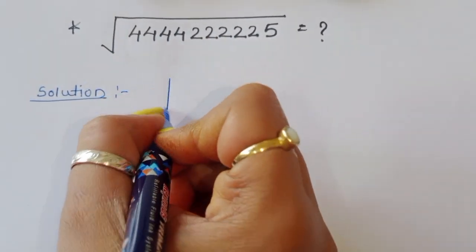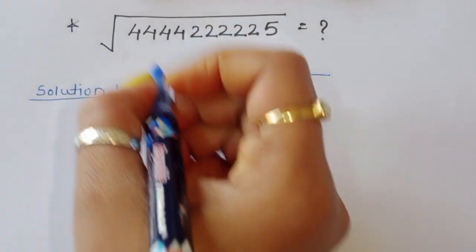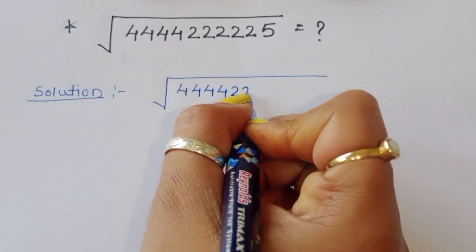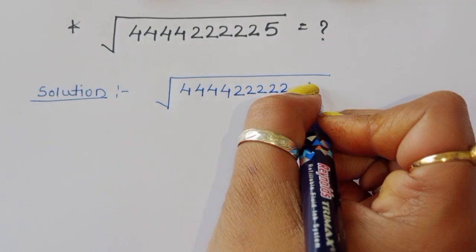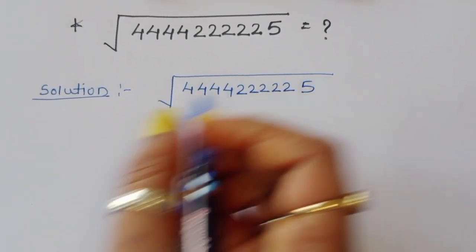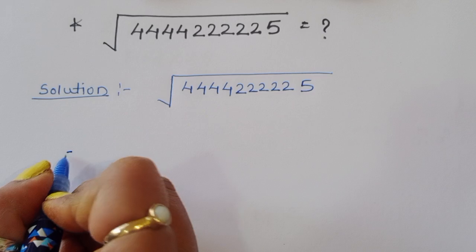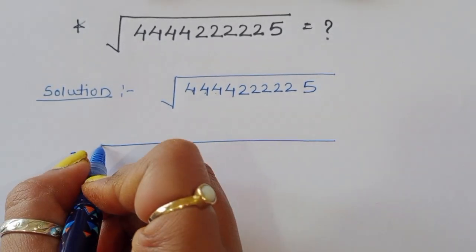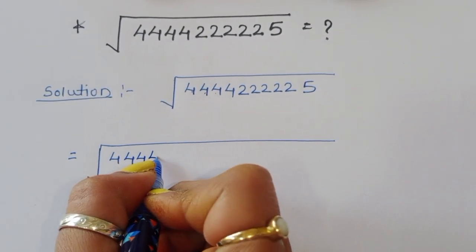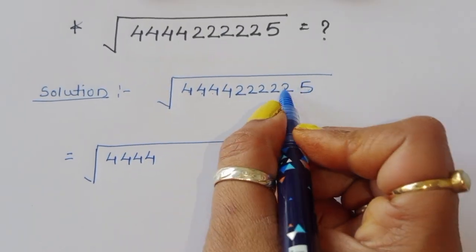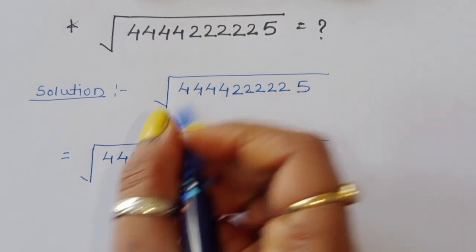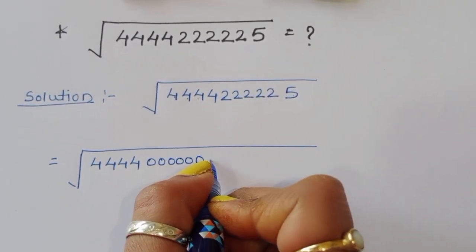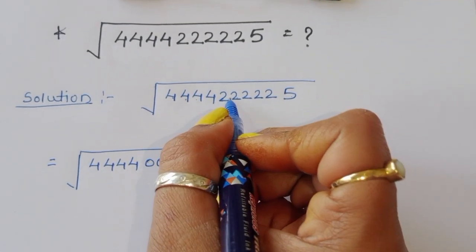We can write this as: square root of 4 repeated 4 times (which is 4444), multiplied by 2 repeated 5 times (which is 22222), multiplied by 5. We can express 4444 as 4 times 1111, giving us 6 digits to work with, and write it as 4 times 1111 times 10^6.